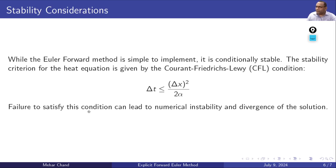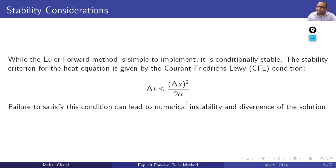While the Euler forward method is simple to implement, it is conditionally stable. The stability criterion for the heat equation is given by the Courant-Friedrichs-Lewy (CFL) condition: delta_t <= delta_x² / (2 * alpha). Failure to satisfy this condition can lead to numerical instability and divergence. This condition must be satisfied for our solution to remain stable.